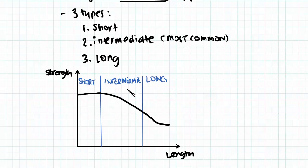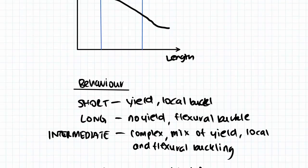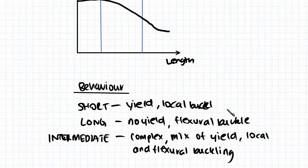The long columns in particular will not ever reach yield load because they are affected by flexural buckling to a very large degree. So short columns are likely to yield or locally buckle. The long ones are not likely to yield and are likely to experience flexural buckling.